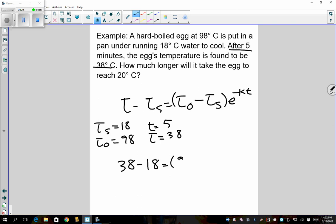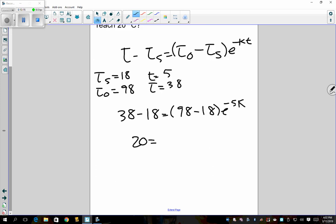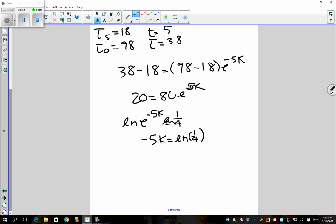So 38 minus 18 equals 98 minus 18 times e to the negative 5K. So now from here this is just a little bit of algebraic maneuvering. So when I get 38 minus 18, I get 20 equals 98 minus 18 equals 80 e to the negative 5K. And then I should get e to the negative 5K is equal to 1 fourth. Taking LN negative 5K equals LN of 1 fourth. And when I plug this in my calculator I should get K is equal to 0.2772. So now I know, going back to my original formula, now I know that this relationship is going to be T minus 18 equals 98 minus 18 e to the negative 0.2772 T.